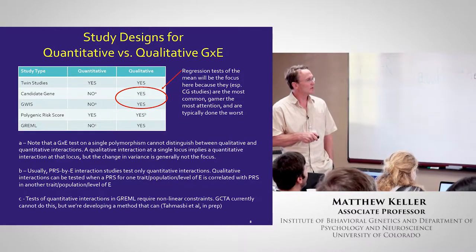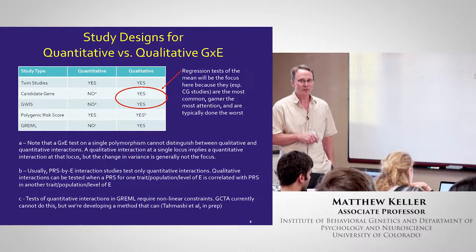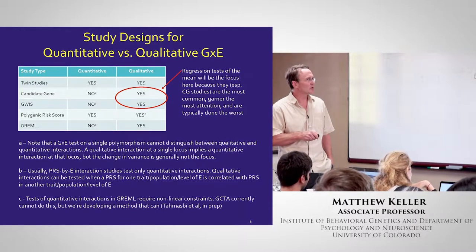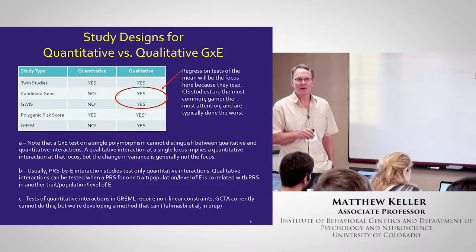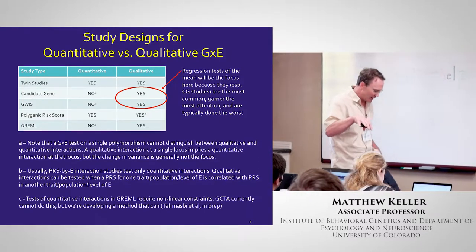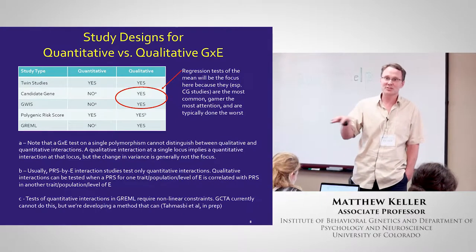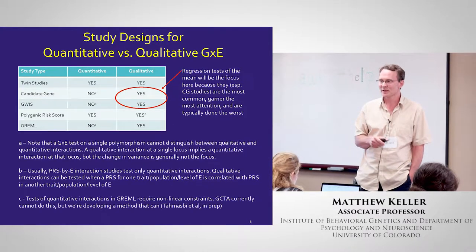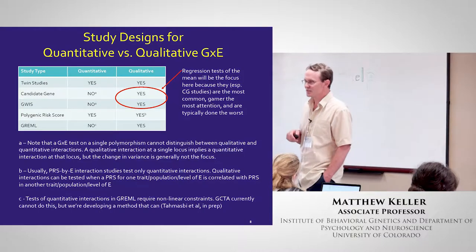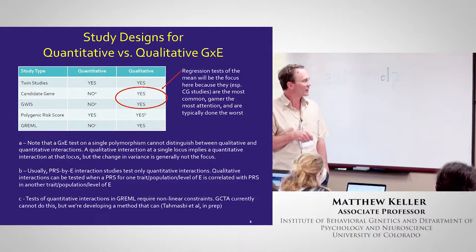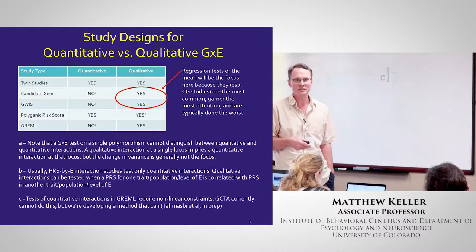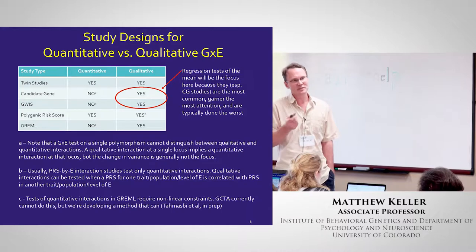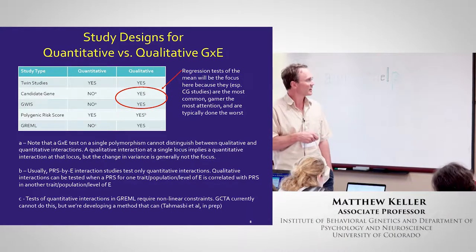GREML — which is the better descriptor of the GCTA method, as GCTA is just the software package — has to date only been instantiated for a qualitative G×E: whether the same genes that affect a trait at one level of the environment are the same as those affecting it at another level. There isn't currently a way to model a quantitative G×E in GREML, though there's a hidden option. My postdoc and I looked at it and found it's biased due to assumptions made to avoid nonlinear constraints in GCTA. We've solved that and are working on getting it published.